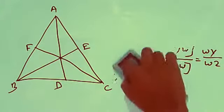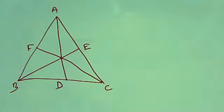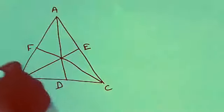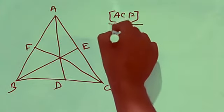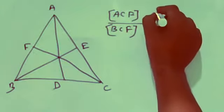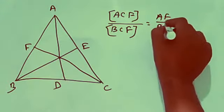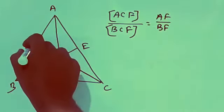So going to the proof section. Now first, look at this figure. Area of triangle ACF divided by area of triangle BCF is equal to AF/BF. That is, area(ACF) divided by area(BCF) is equal to AF/BF.